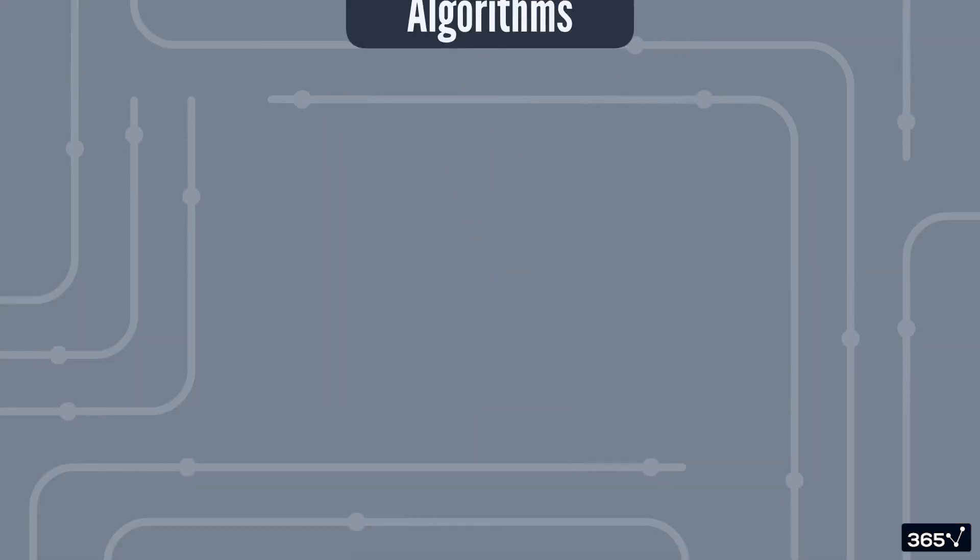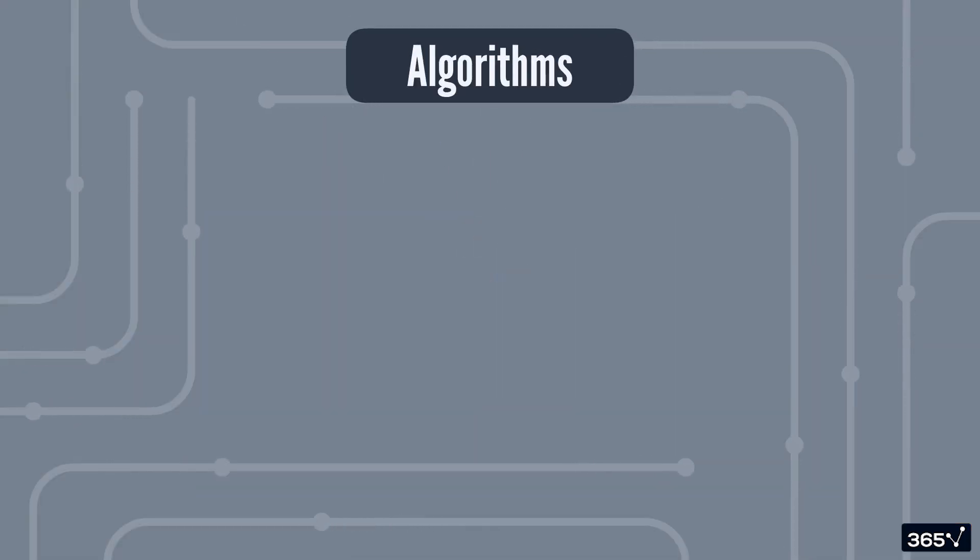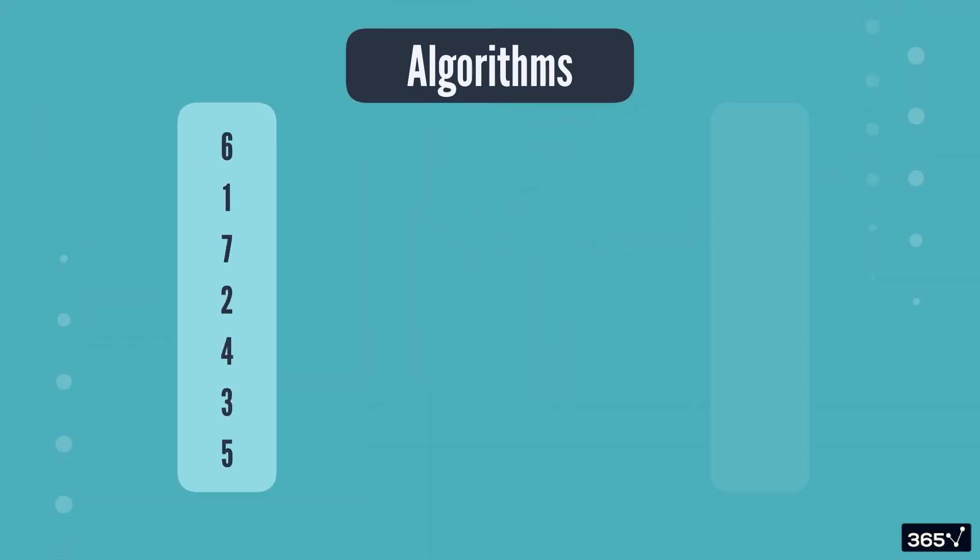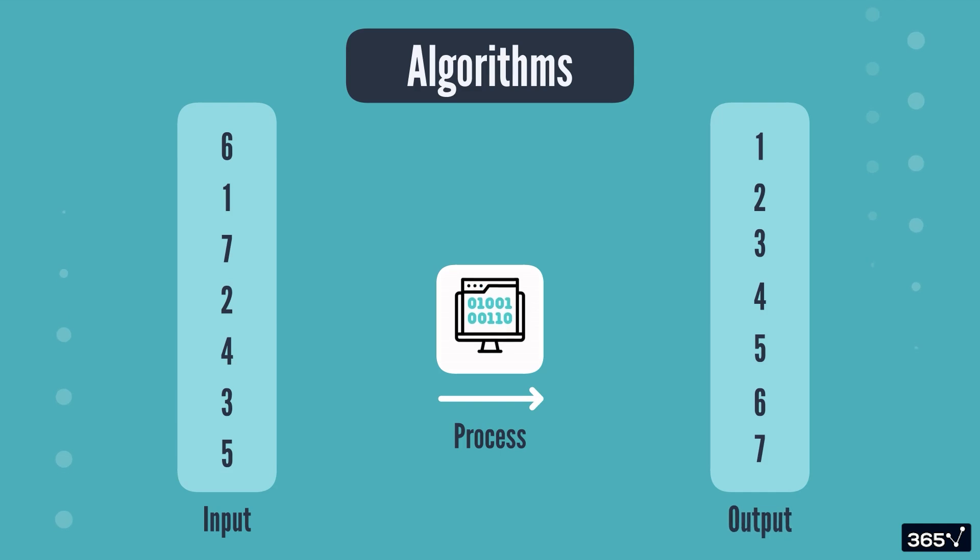At a fundamental level, every algorithm follows this simple model: input, process, output. For example, when you sort a list of numbers from smallest to largest, the unsorted numbers are the input, the sorting steps are the process, and the sorted list is the output.